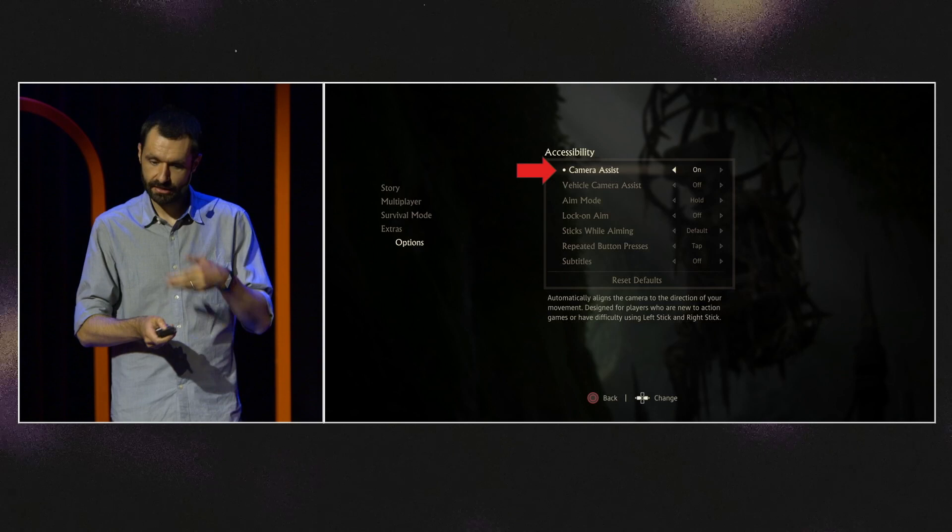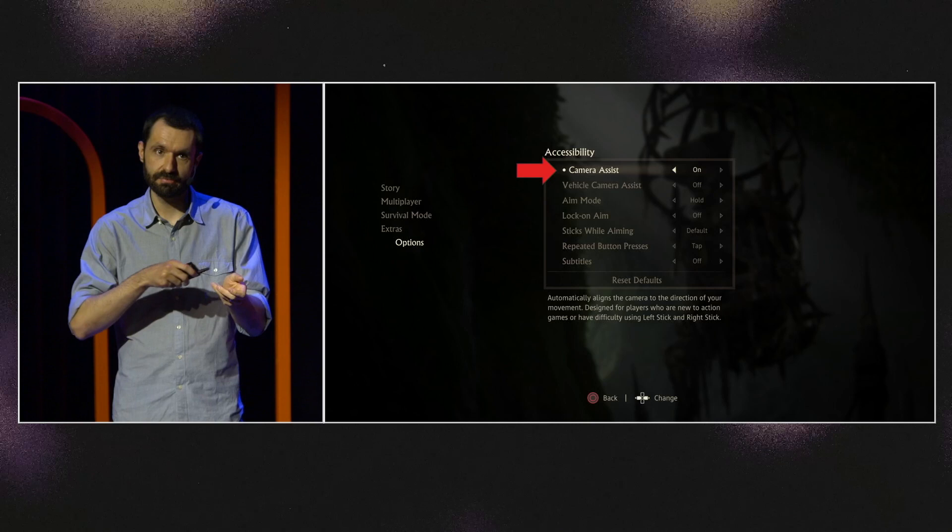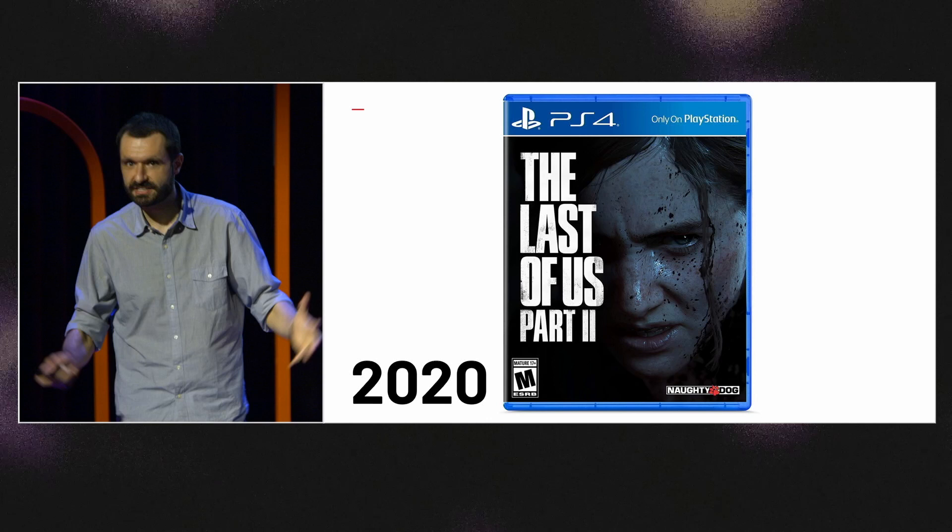There was also an option where normally the left stick controls the character and the right stick controls the camera. Uncharted 4 had an option to only control the camera with one stick and have the camera automated to point toward the direction of movement. We were so thrilled to have all these accessibility options and wanted to go even further on The Last of Us Part II.